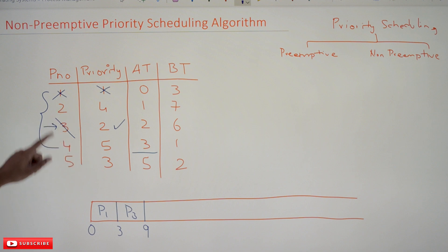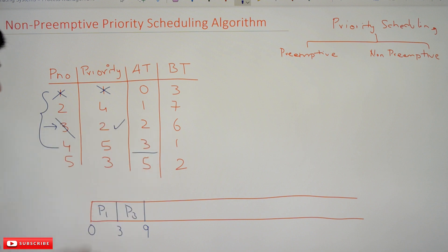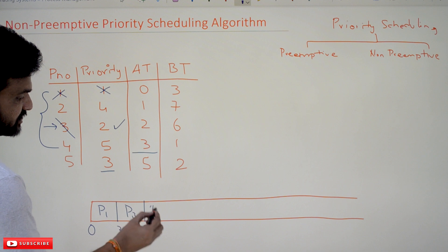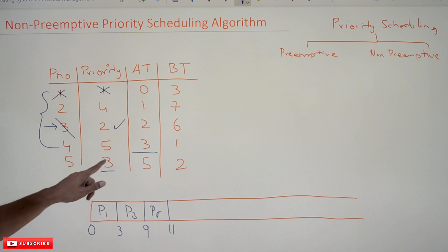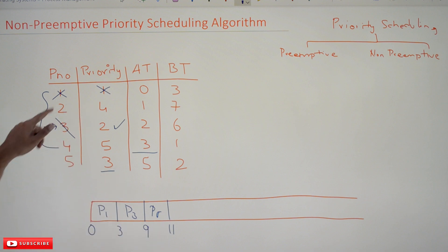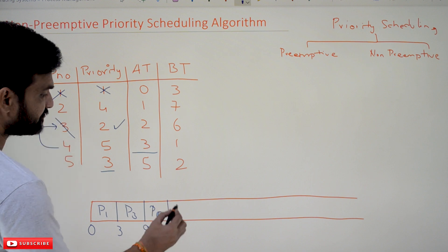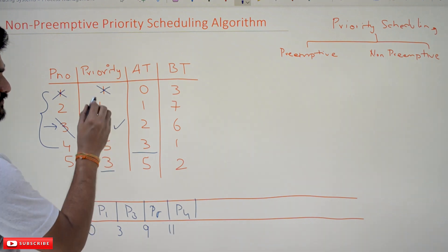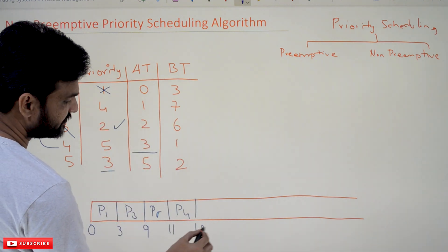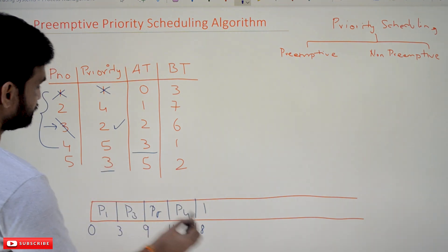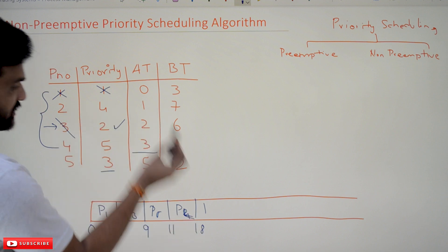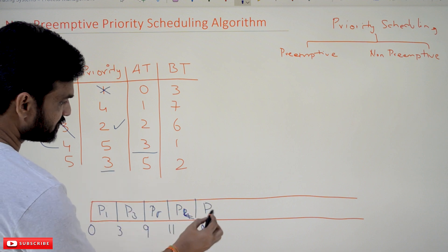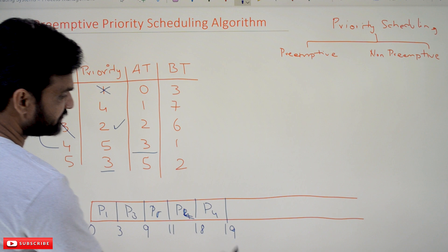We are now left with P2, P4, and P5. Among these three processes, P5 is having the lowest priority number — so P5 will get executed; its burst time is two. After P5, the remaining processes are P2 and P4. Among these two, P2 will get executed because P2 has the highest priority. The burst time of P2 is seven, completing at time 18. Next, P4 will get executed; P4 has a burst time of one, completing at time 19.